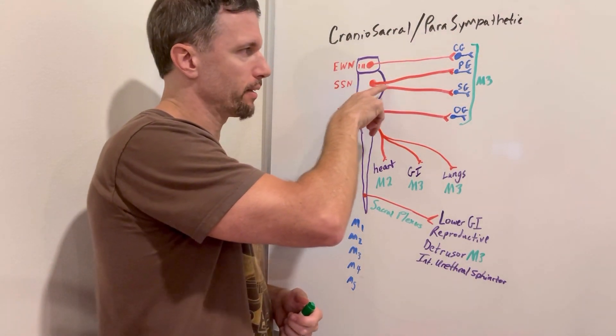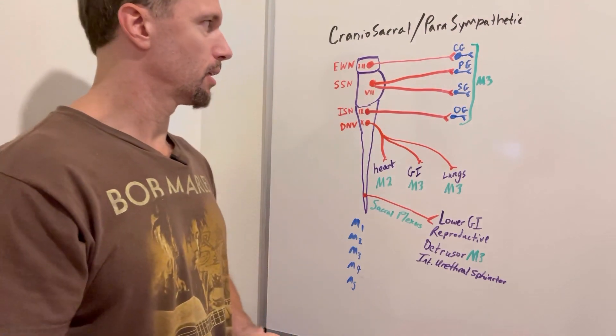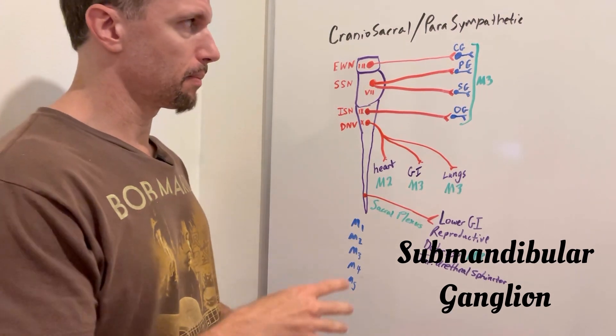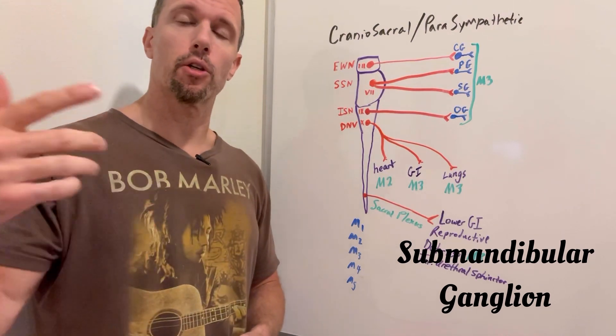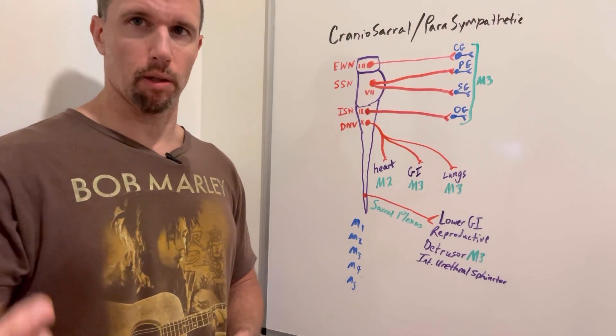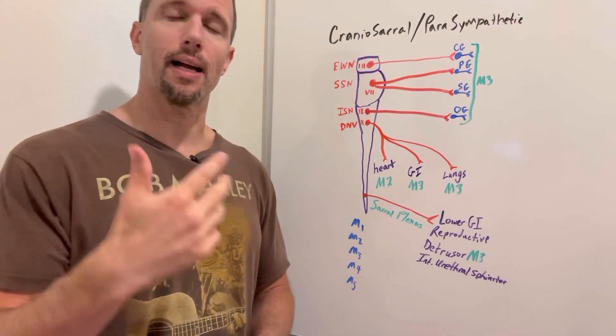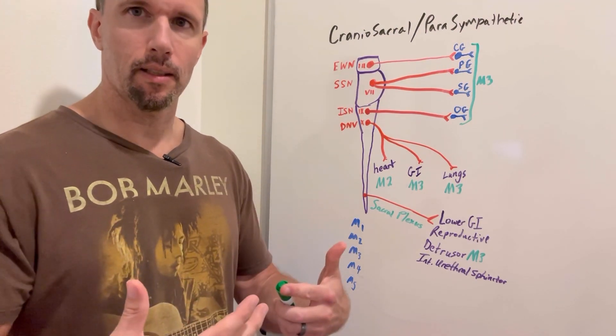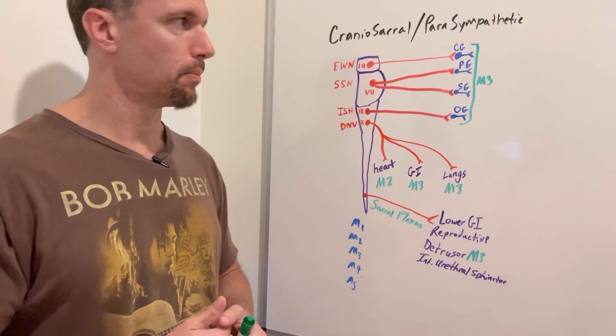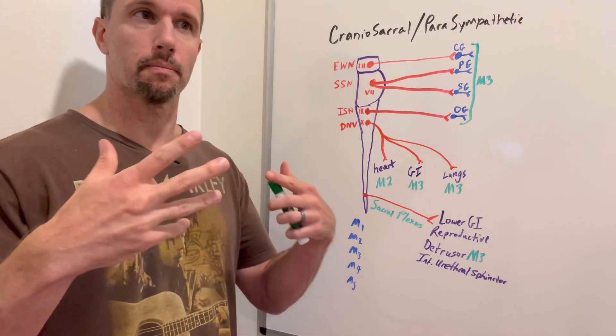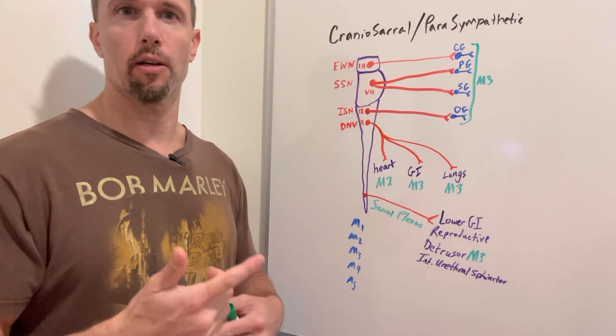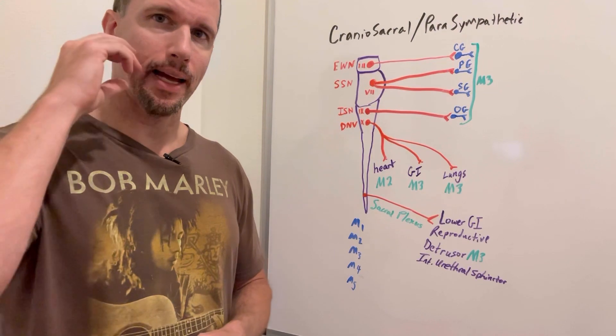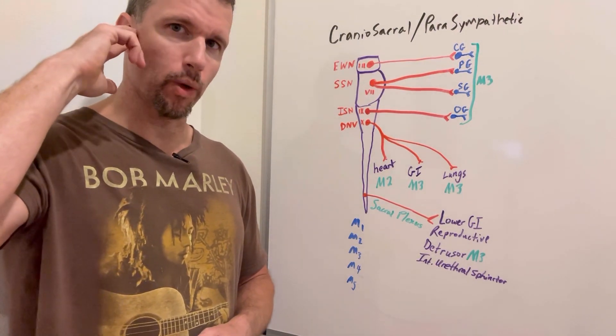Then you have another preganglionic fiber going to a different terminal ganglion, the submandibular ganglion. The submandibular ganglion then goes to the submandibular gland as well as the sublingual gland, two of our salivary glands. That's going to increase salivation because the parasympathetic nervous system is rest and digest. Anything that would facilitate digestion is in the parasympathetic realm. We need saliva to be released because we have amylase to help start our carbohydrate digestion.